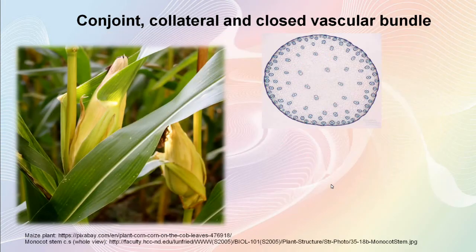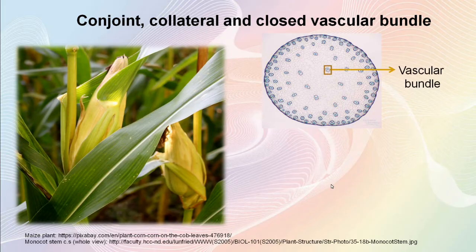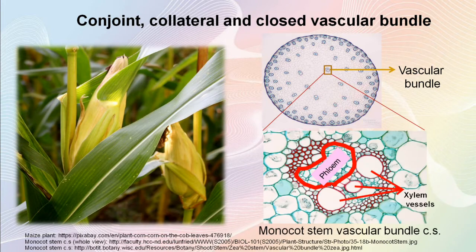Let's check the cross section of a monocot stem — for example, this maize stem. In monocot stems, there are more vascular bundles than those seen in dicot stems. Here is a vascular bundle. Let's zoom into it. Here you can see the xylem vessels and the phloem region of the vascular bundle. There is no cambium present in between xylem and phloem. So this vascular bundle is conjoint, collateral and closed.